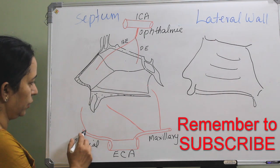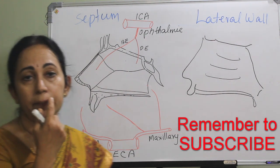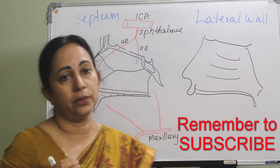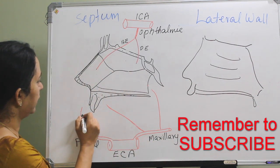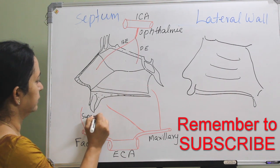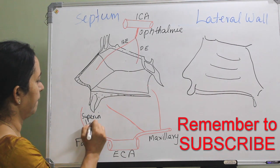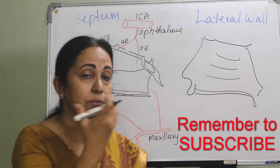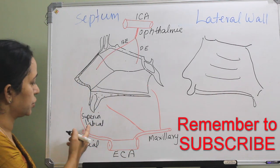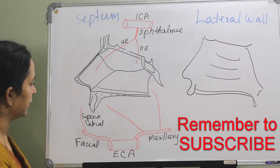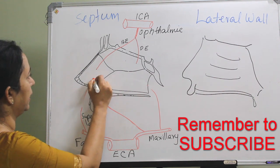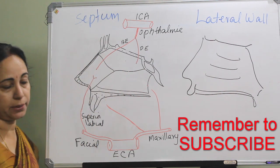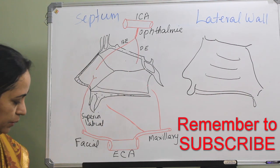From the facial artery goes the superior labial artery. Think that around the nose comes the upper lip, so the superior labial artery comes from the facial artery to the septum through the upper lip. The septal branches of the superior labial artery come and supply the anterior part of the septum.